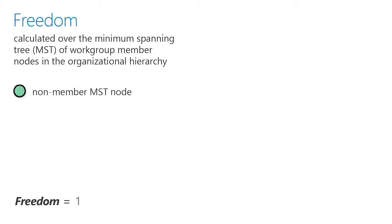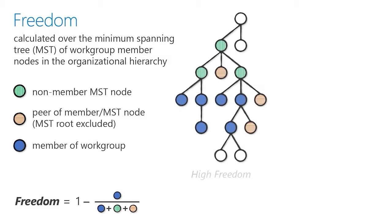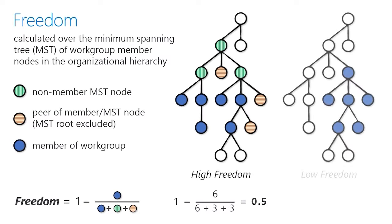To give you a quick example: if you have a group that has very high freedom, that is a group that is probably working across the company. You might have an engineering group that's working with marketing, sales, and finance — that group would have a lot of freedom because those people are working with others not necessarily in their hierarchy. On the contrary, if a group has very low freedom, that means they're really only working within the confines of that HR-defined organization and not collaborating with people outside that group.